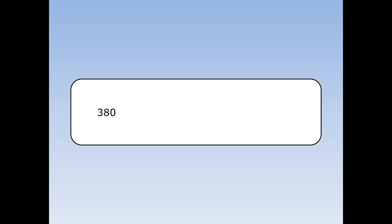What's three hundred and eighty in standard form? First of all, I need a number between one and ten. So three hundred and eighty equals three point eight times a hundred, which is equal to three point eight times ten squared. Three point eight is between one and ten, times ten to the something — this is standard form.